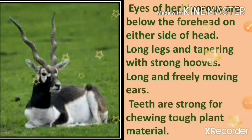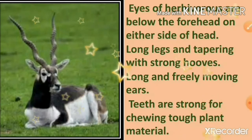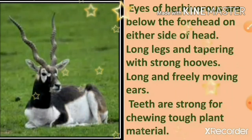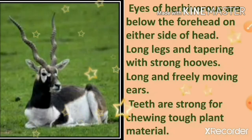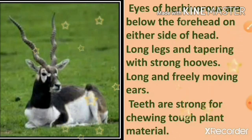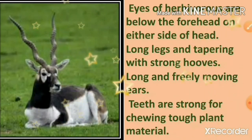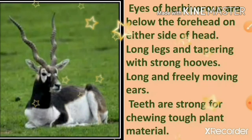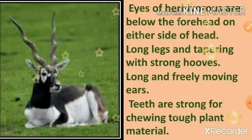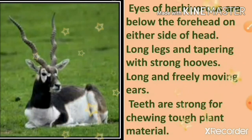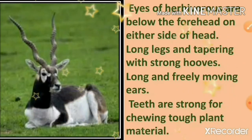Adaptation in Forest and Grassland Animals: The eyes of herbivores are below the forehead on either side of the head. They have long legs tapering with strong hooves, long and freely moving ears, and teeth that are strong for chewing tough plant material.